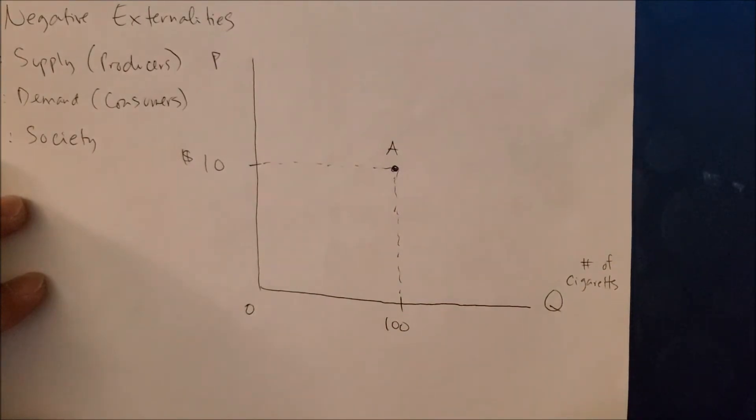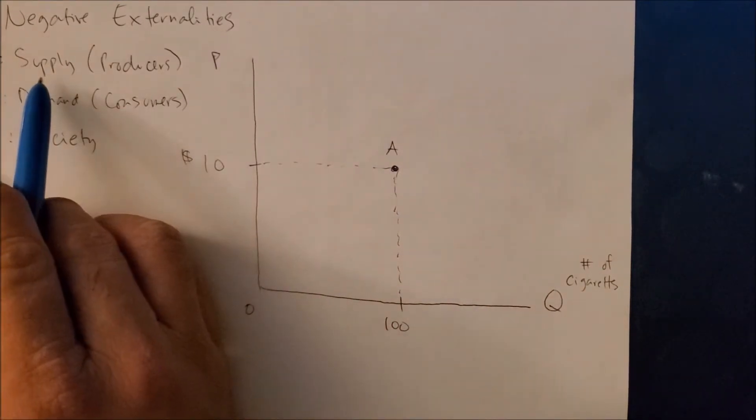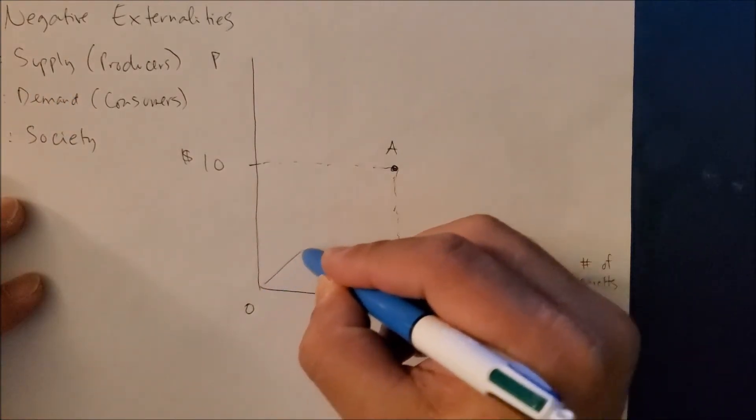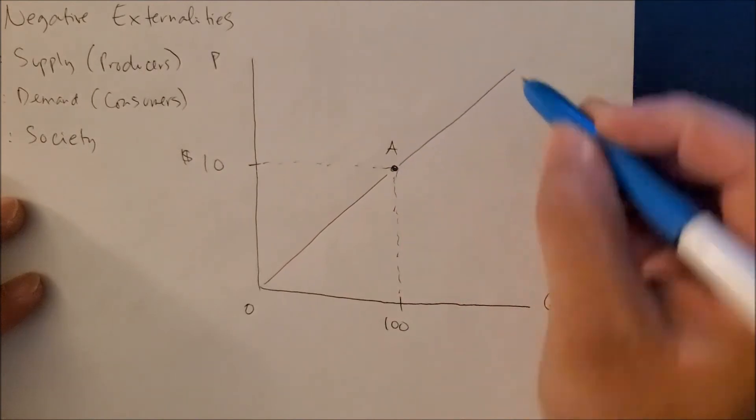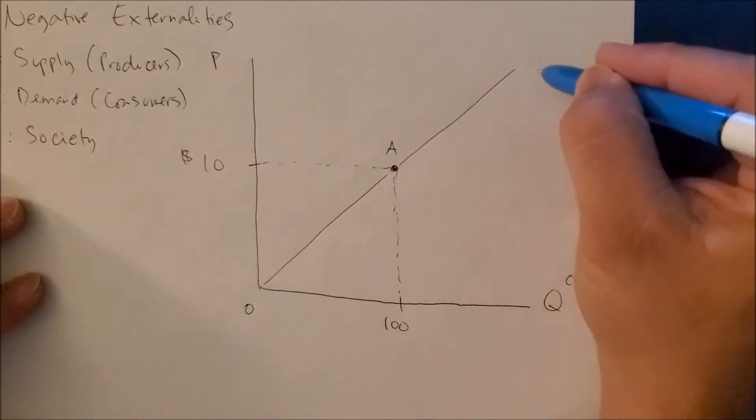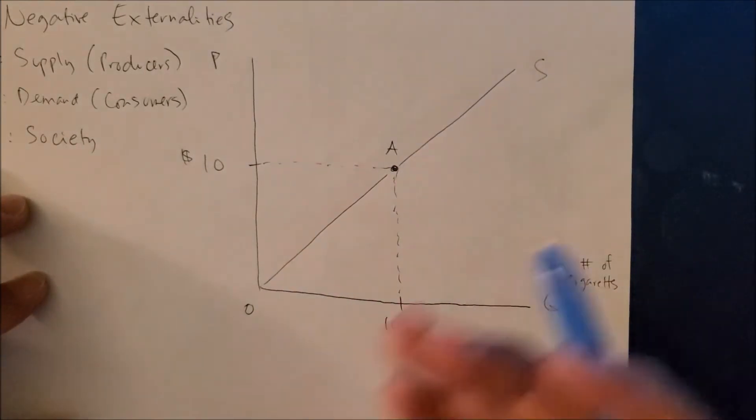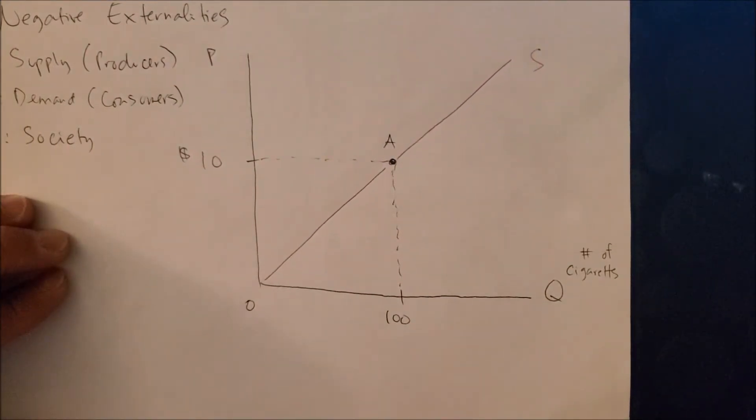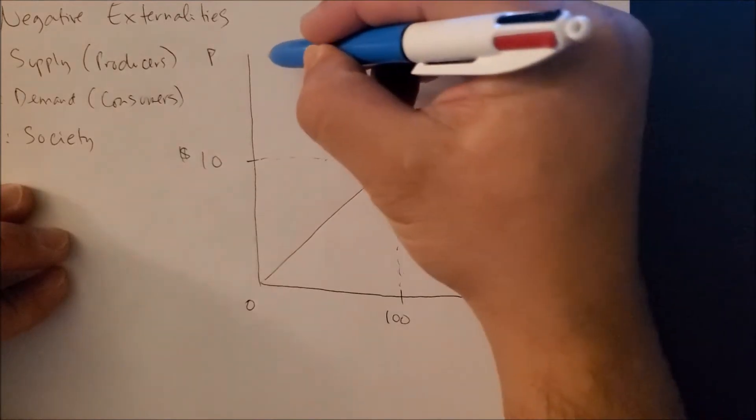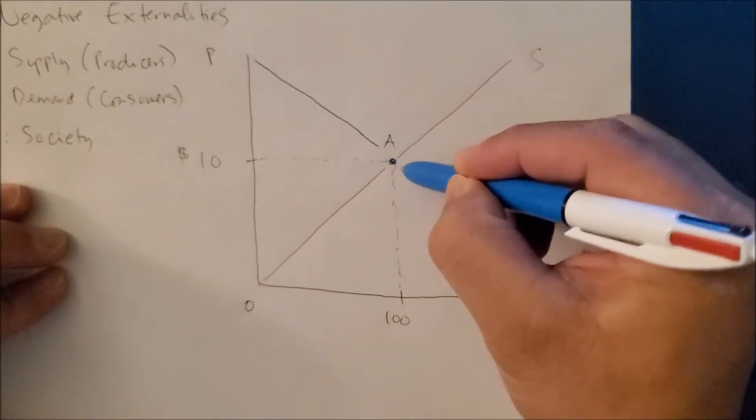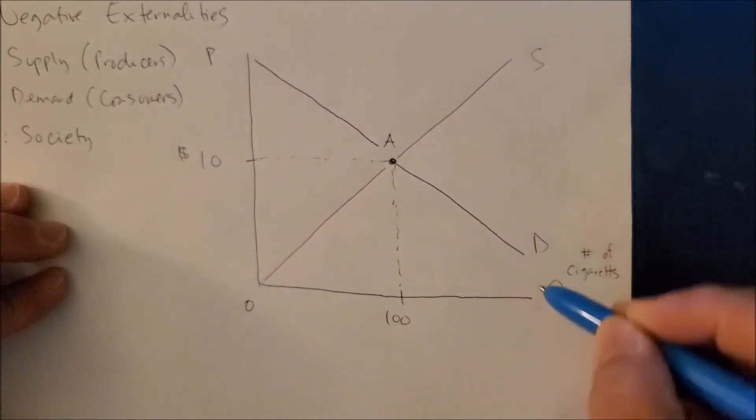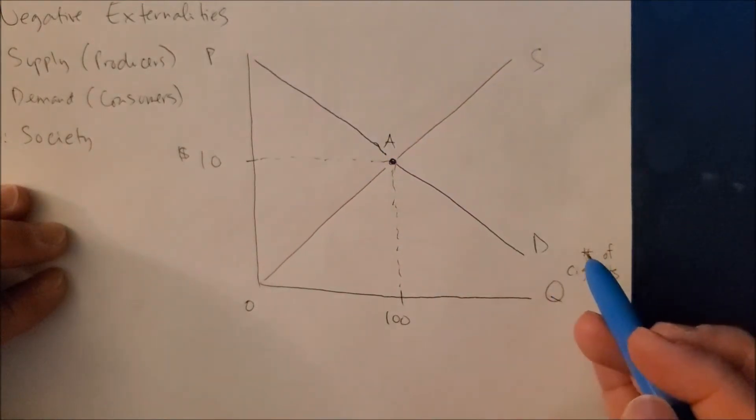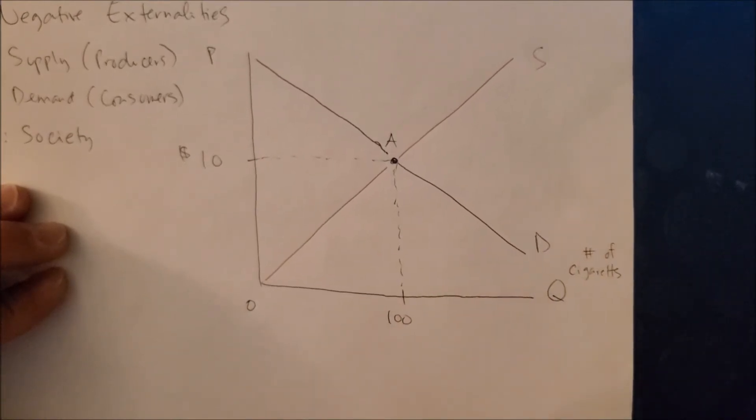Now we can draw the supply curve, the party that is producing the goods itself. The supply curve is going to be represented by this red upward sloping graph or curve known as the supply curve. After we have drawn the first party, now we can draw the demand curve, the second party, those who are consuming the cigarettes. You, me, neighbors, etc., those who are smokers.